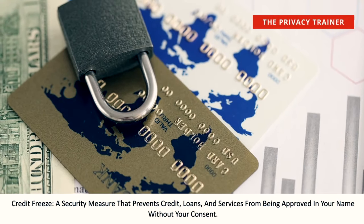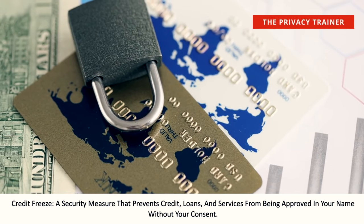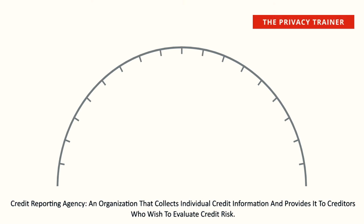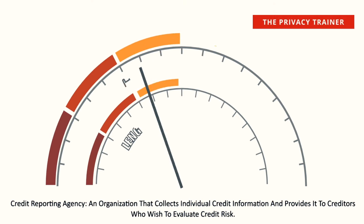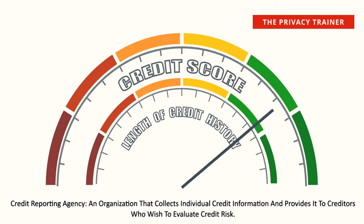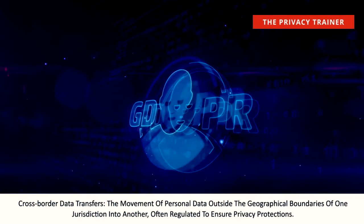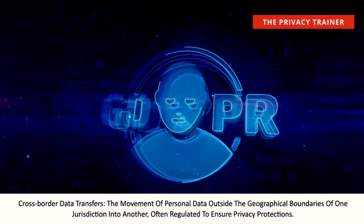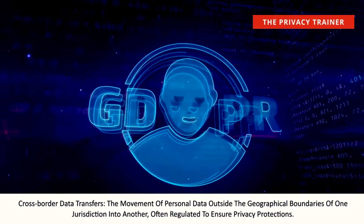Credit freeze. A security measure that prevents credit, loans, and services from being approved in your name without your consent. Credit reporting agency. An organization that collects individual credit information and provides it to creditors who wish to evaluate credit risk. Cross-border data transfers. The movement of personal data outside the geographical boundaries of one jurisdiction into another, often regulated to ensure privacy protections.